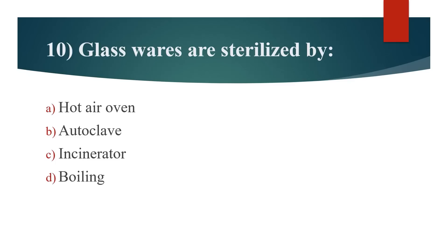10th question: Glass wires are sterilized by? Option A: Hot air oven. Option B: Autoclave. Option C: Incinerator. Option D: Boiling. Answer is Option A: Hot air oven.